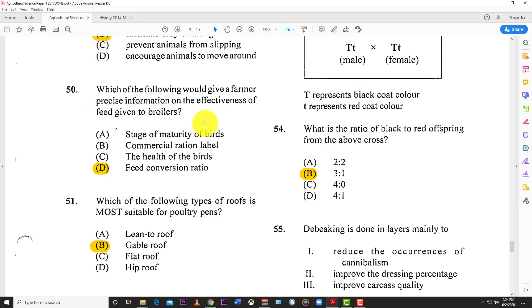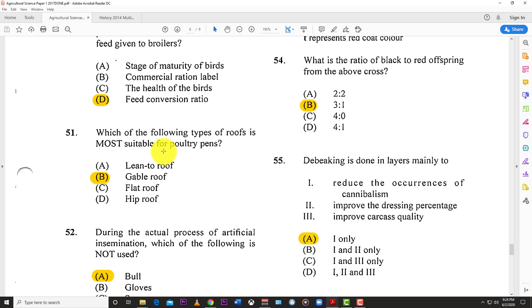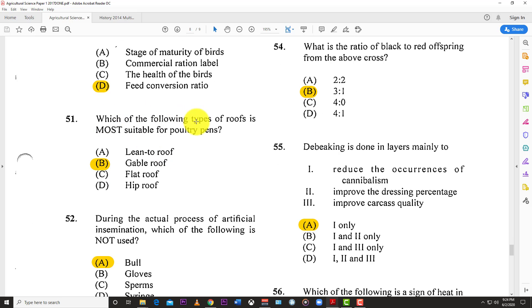Number forty-eight: Food supplied in excess of maintenance needs of the animal is referred to as production ration. You have your maintenance ration, and if you add extra stuff, it becomes production ration. Number forty-nine: The concrete floors in pig pens are gently sloping to facilitate easy cleaning.